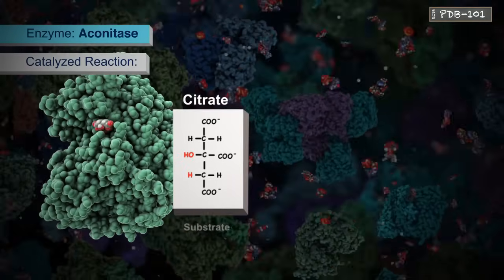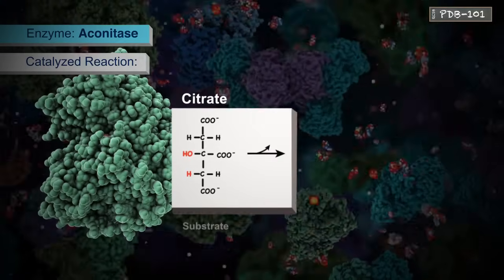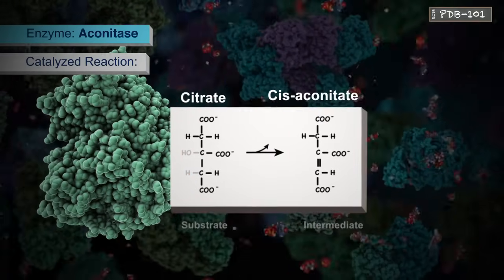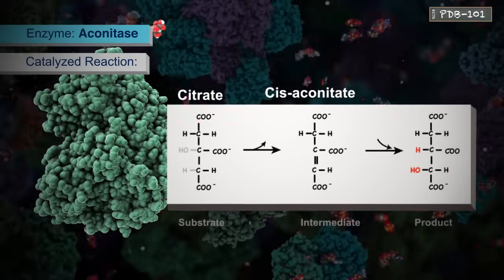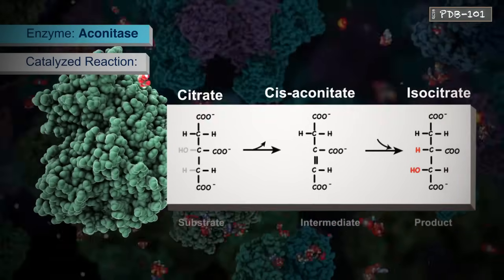Aconitase binds to its substrate citrate and removes a hydroxyl group and a hydrogen atom to form the intermediate cisaconitate. It then adds the hydrogen and hydroxyl back in slightly different positions to form the product isocitrate.